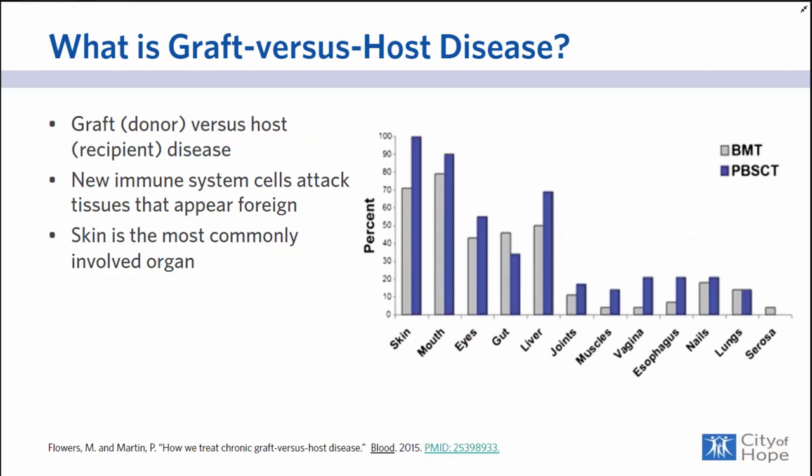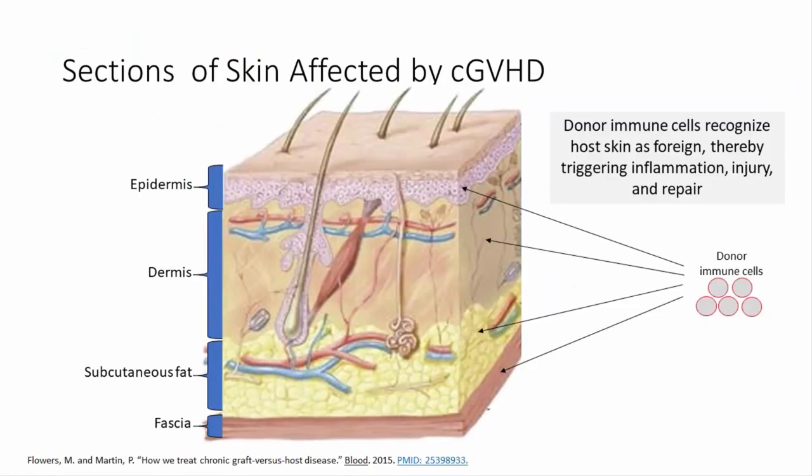As a dermatologist, the skin and other cutaneous structures are near and dear to my heart. The skin is actually the most common place where Graft-vs-Host Disease manifests. The next most common area is the mouth, and beyond that, the eyes, gut, and liver. We're going to focus mostly on skin today. I like to think about chronic GVHD anatomically. There are four major layers of the skin: the epidermis on top, the dermis below it, the subcutaneous fat, and the fascia, which tethers the skin down and attaches it to muscle or bone.